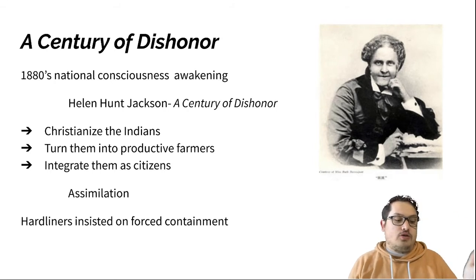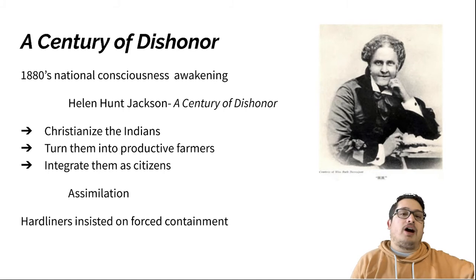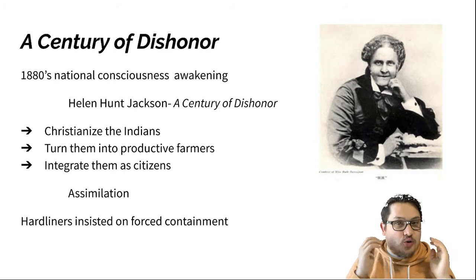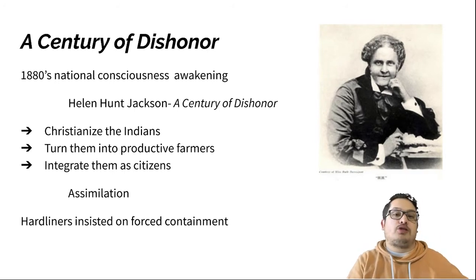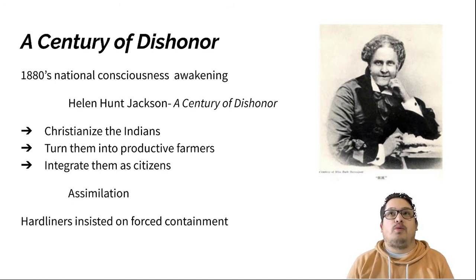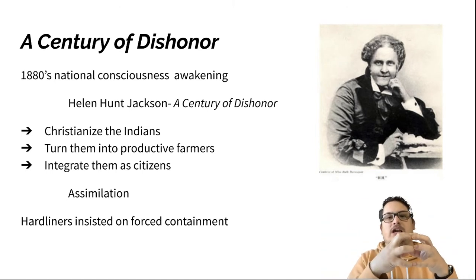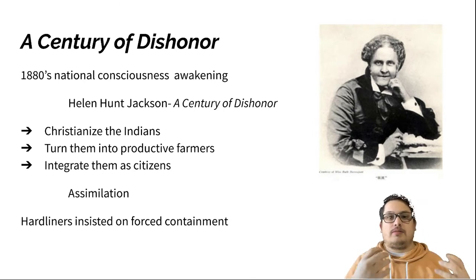Helen Hunt Jackson is saying this is really wrong — a century of dishonor in our treatment of Native Americans, we need to change. Some of the things she goes with are: we need to Christianize them, turn them into productive farmers, and integrate them as citizens through assimilation. It's great she's acknowledging the problems, but the tactics she's going with are still things we would now say are wrong. The focus on assimilation — when you have a group come into a culture and the dominant culture expects this group to become like them, instead of keeping their own customs and identities.